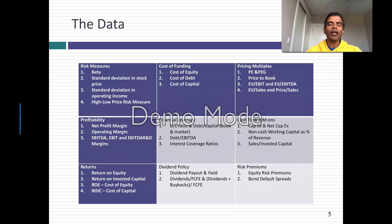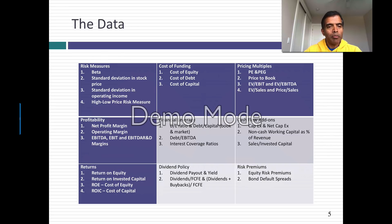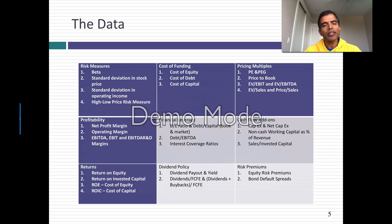Then I look at profitability measures — every conceivable margin I can compute: net margins, operating margins, EBITDA margins, EBITDA before R&D margins, essentially by sector. Then I look at returns: return on equity, return on invested capital. I compute excess returns where I compare the return on equity to the cost of equity and the return on capital to the cost of capital within each sector. Those excess returns become a measure of value creation — it looks at whether companies are creating or destroying value when they grow.